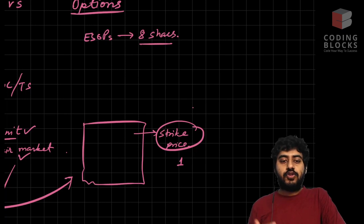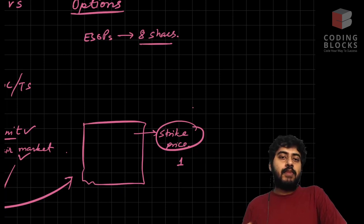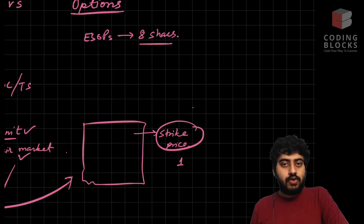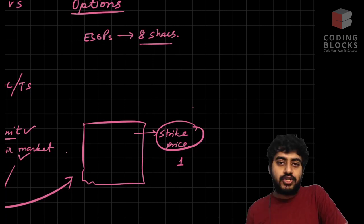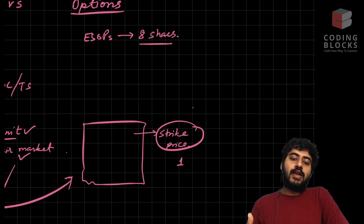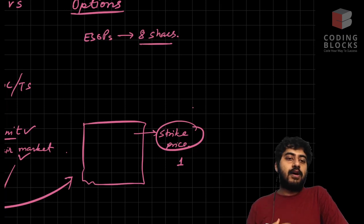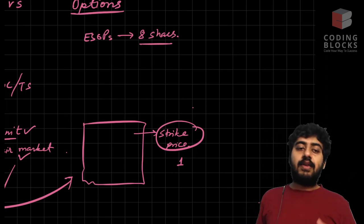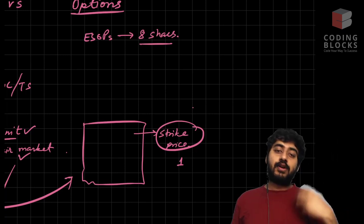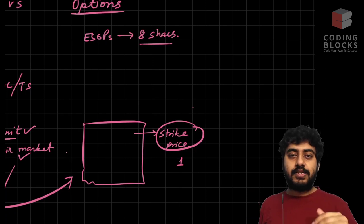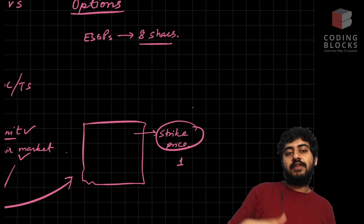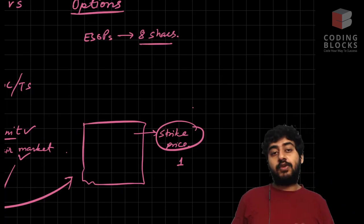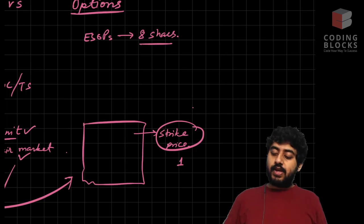ESOPs only make financial sense if two things happen: first, enough shares vest (whole numbers); and second, the company either goes public (IPO) or gets acquired. If you exercise an ESOP in a private company you own paper shares but must pay real tax, which doesn't make sense. Nobody usually exercises ESOPs unless the company goes public. If the company never IPOs or gets acquired, your ESOPs can't actually be sold.